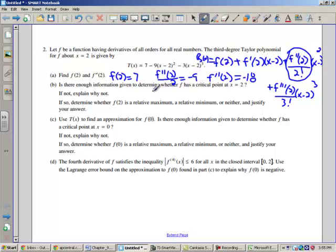Part B, is there enough information to determine whether f has a critical point at x equals 2? If not, explain not. Well, critical point simply means your derivative was 0 or undefined. So let's take a look here. Where is f prime at 2? f prime of 2 is the coefficient of the x minus 2 term. And where is that? Well, oh my goodness, it's not there. We don't have an x minus 2 term, which means that f prime of 2 worked out to be 0. So yes, it has a critical point. If so, determine whether f of 2 is a relative max, relative min, or neither.